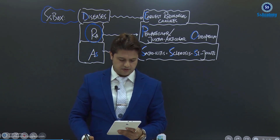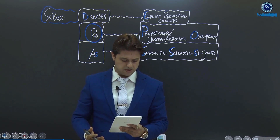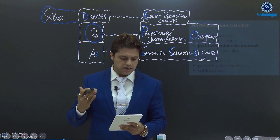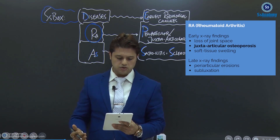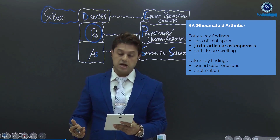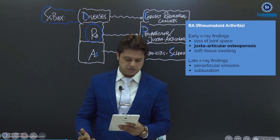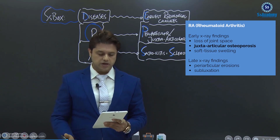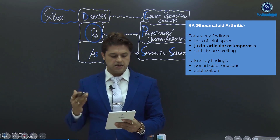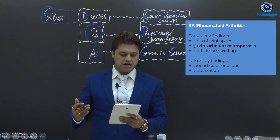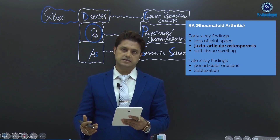So yes, my dear doctor, listen very carefully. For rheumatoid arthritis, some of the X-ray changes — just follow what is written in your notes. The early X-ray findings are the loss of joint space, juxtaarticular osteoporosis, and soft tissue swelling. And late X-ray findings are the periarticular erosions and subluxation.